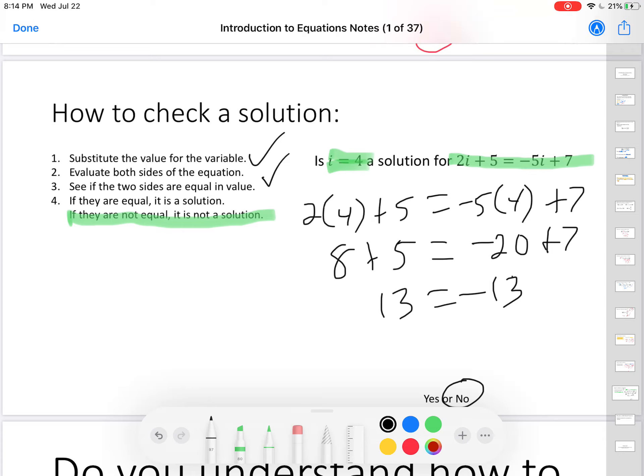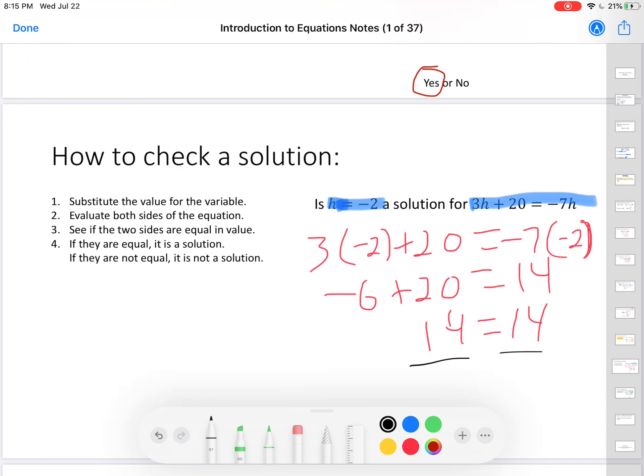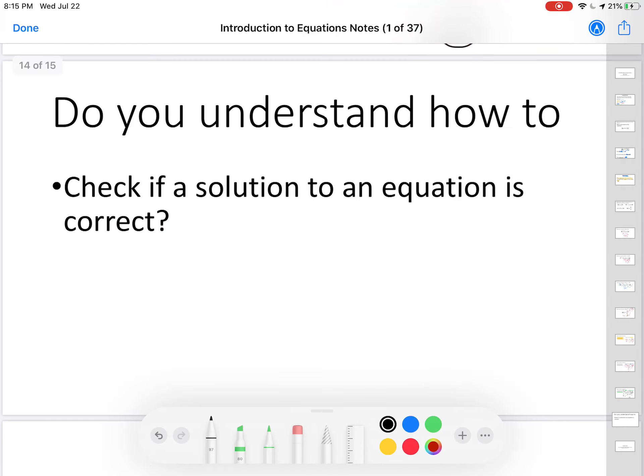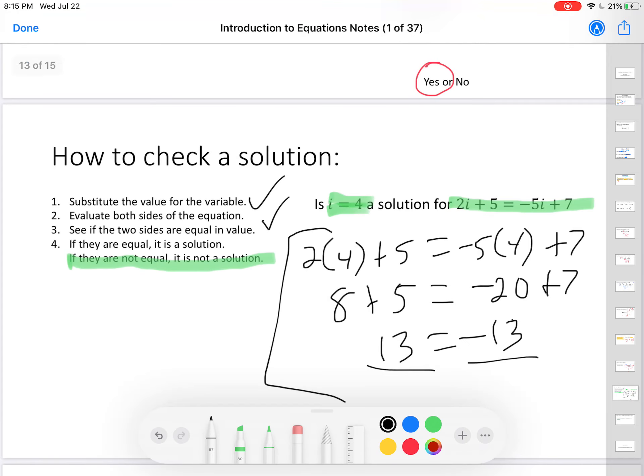You have to understand how to do the substitution step. How to evaluate both sides and show all of your steps in evaluating. And you have to show the two sides. And you have to see if they are equal or not equal. If they are equal, like in this case where 14 equals 14, you circle yes. If they are not equal, like 13 equals negative 13, you circle no. Make sure you show all the steps. Do you understand how to check if a solution to an equation is correct? That's this whole process. This four-step process.